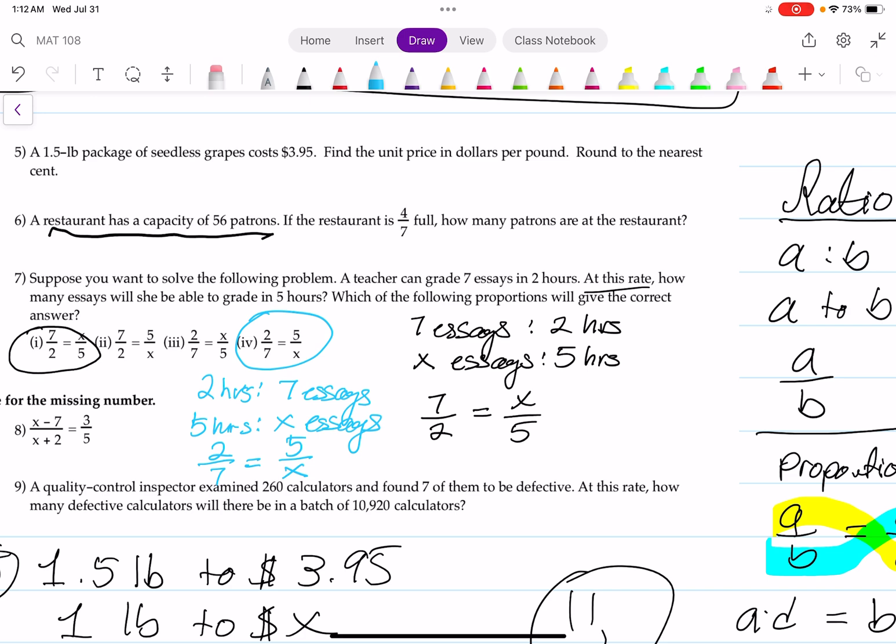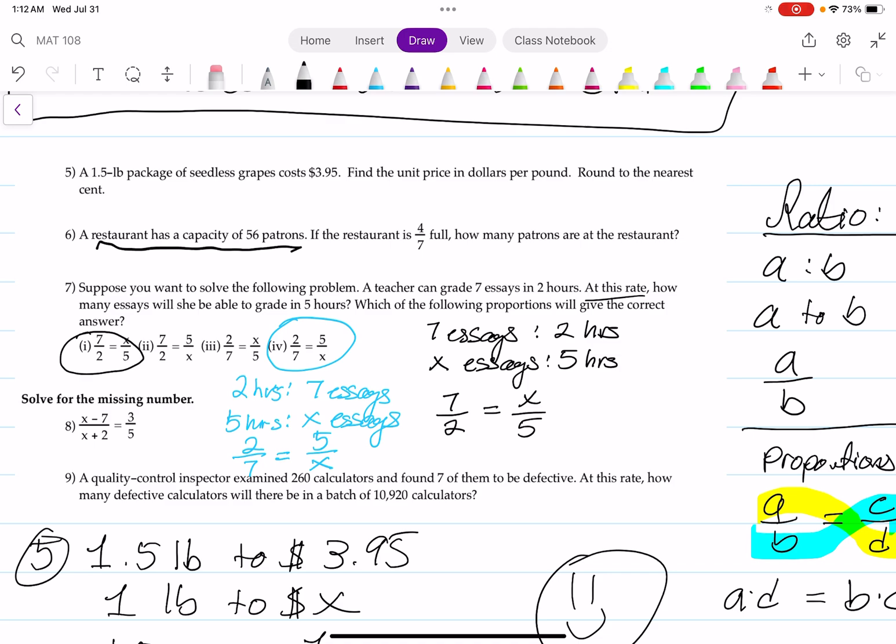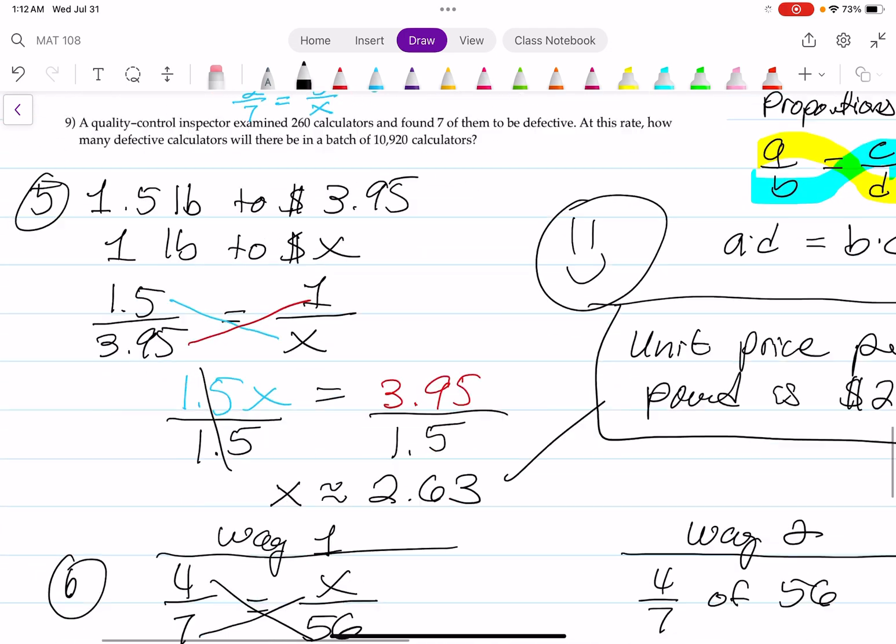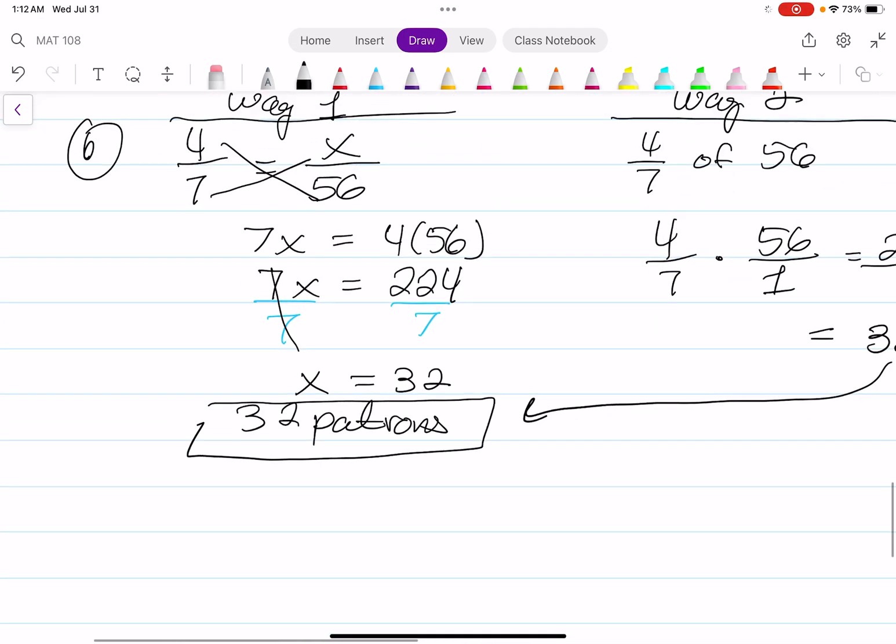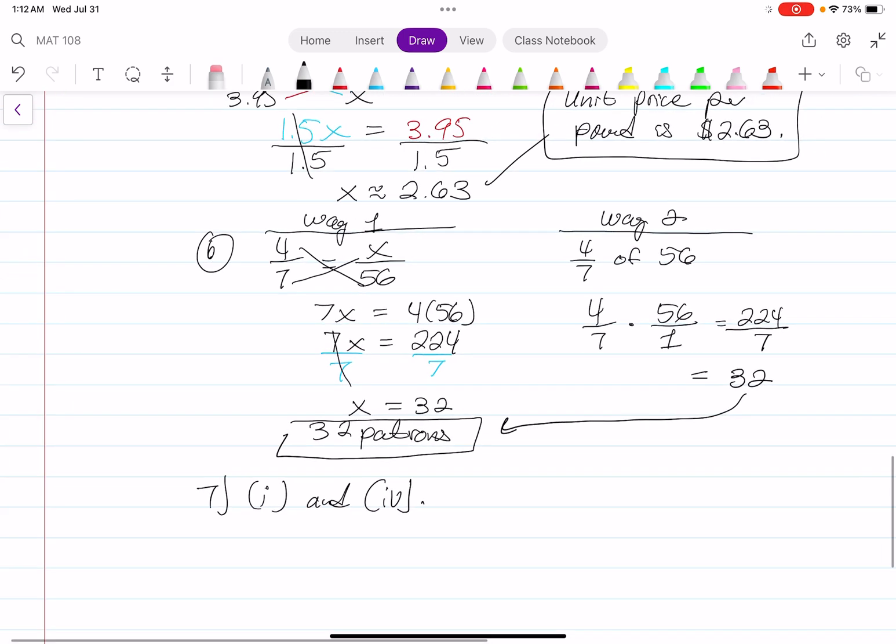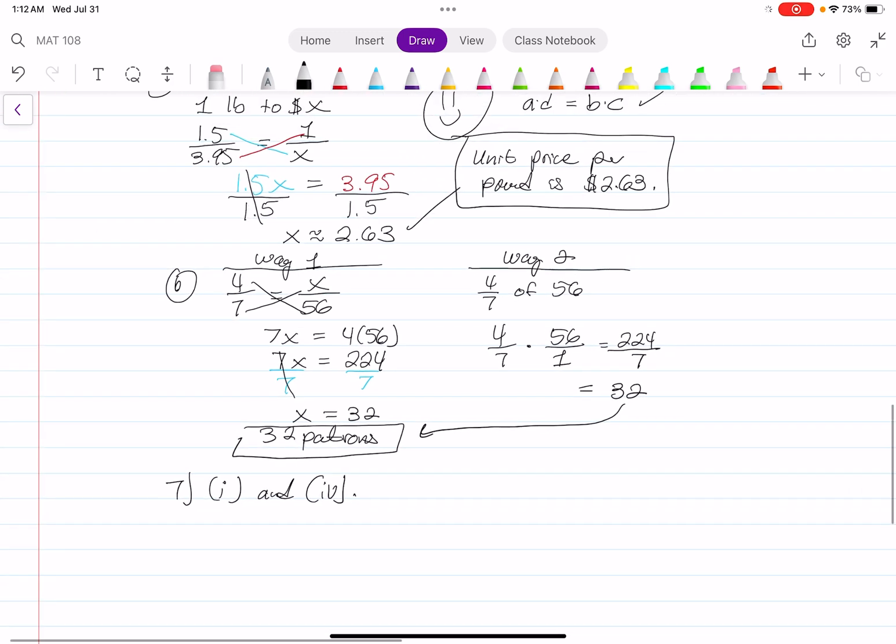The answer to number 7 is proportion one and proportion four. For seven, we're going to say proportion one and proportion four. And there you go.